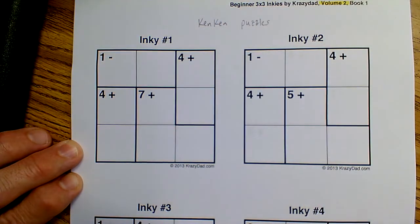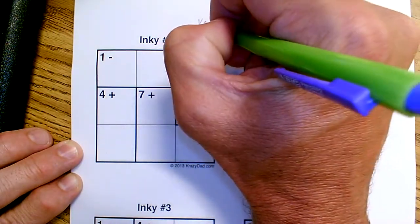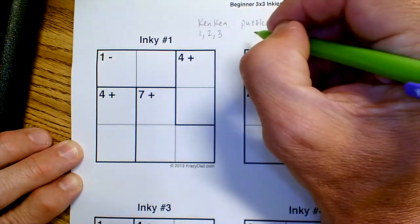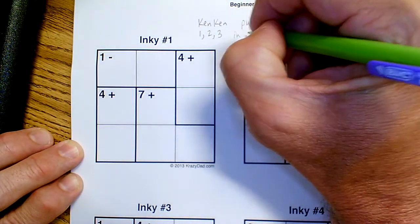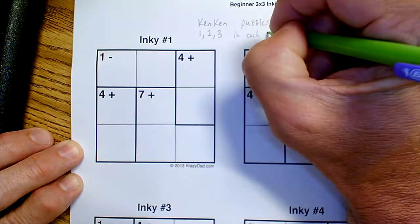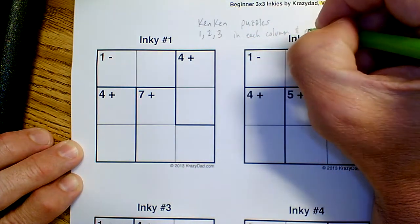A little critical thinking. For Ken Ken puzzles, you can only use numbers 1, 2, and 3, and they have to have a 1, 2, and 3 in each column and row.